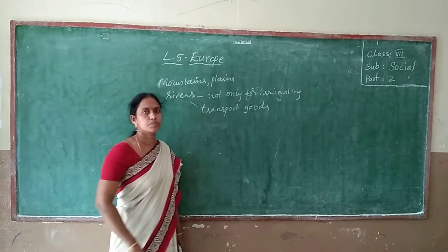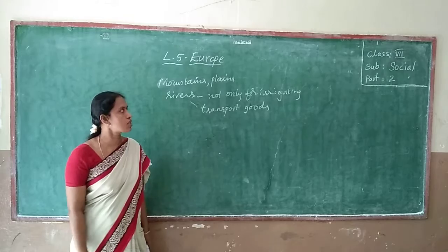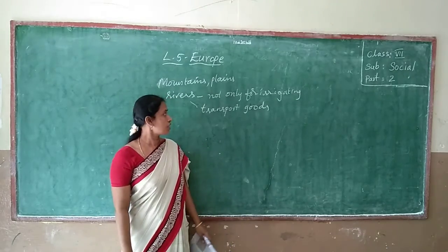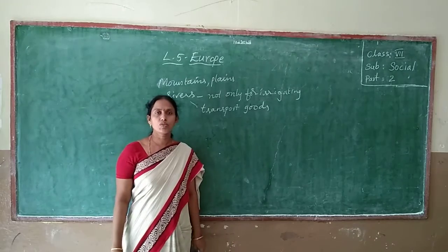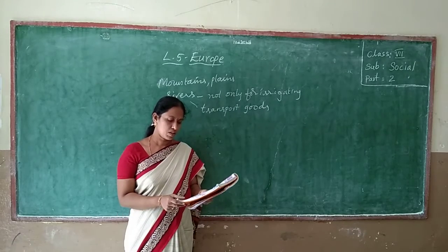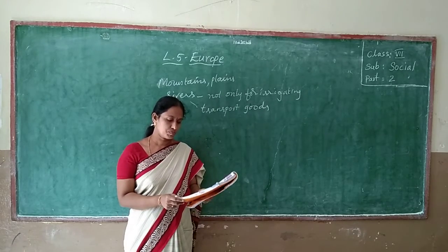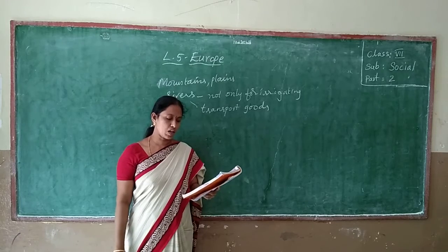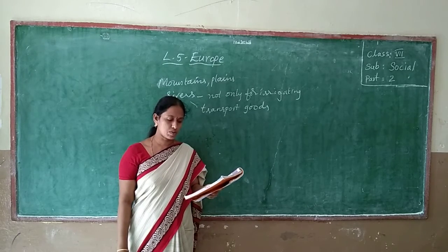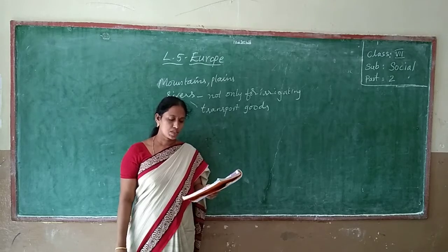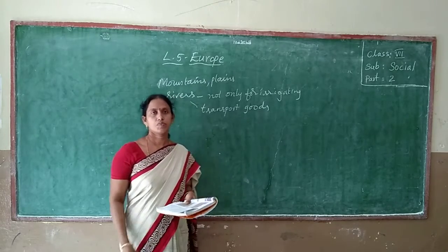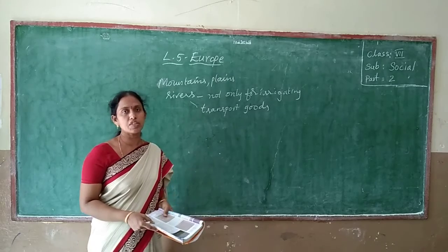How are the rivers in Europe? The rivers are used not only for irrigating fields, but for transport also. See page number 43. Ships and barges ply all these rivers and transport people and goods from one place to another. Since these rivers flow across several countries, there are so many rivers in Europe.